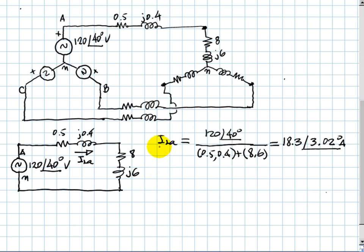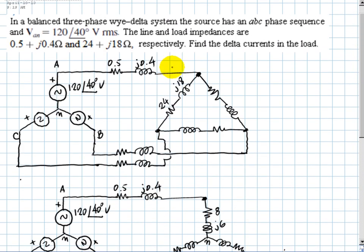What's the current inside the delta in each one of the three phases? We have to go back to this diagram. Now we know this current, right? This is I line A, and we are to find what is the current - this one. We need some labels. Let's call this A, B, and C. So this current is the current from A to B, and this is the current from C to A. The three currents inside the delta, out of symmetry, have the same magnitude and are out of phase by 120 degrees.